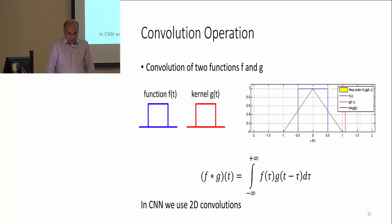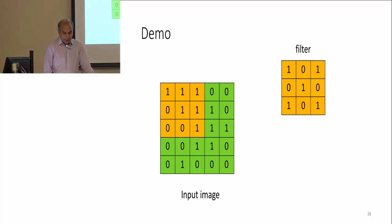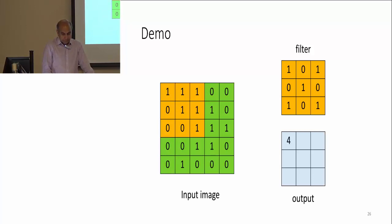In another example: we have an image and apply a 3x3 filter, multiply pixel by pixel, get an output, then shift and repeat. That is the convolution operation — the basic building block of deep learning CNNs.